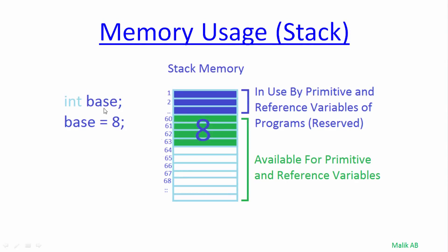Here we are declaring a variable 'base' of type int, and as you can see, 4 bytes are reserved for an int variable, so these 4 bytes — 1, 2, 3, and 4 — are allocated to this variable 'base'. Now we are initializing this base variable with the value 8, so this value 8 will be stored in this memory. The remaining memory is available and can be allocated to other variables.